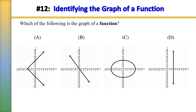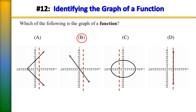Number 12: which of the following is the graph of a function? The correct answer is choice B. Recall a graph is a function if it passes the vertical line test: a relation is a function if and only if no vertical line intersects the graph at more than one point. Drawing a vertical line through each graph, choice B is the only one that passes the vertical line test.